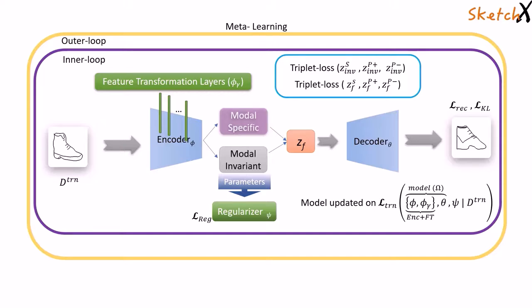In the outer loop, the updated model is run on meta-test dataset having unseen sketch styles without FT layers or the regularizer to produce meta-test loss using which the regularizer and the FT layers are updated.